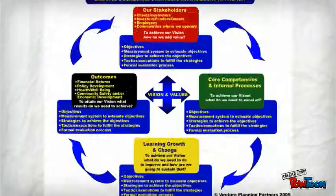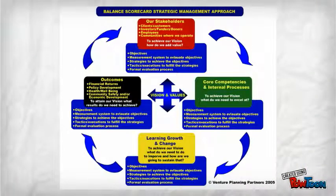The balanced scorecard integrates performance measures in four key areas: financial, internal business process, customer, and learning and growth. Financial includes profit, cash flow, revenue growth, and gross margin by cost and customer segment.